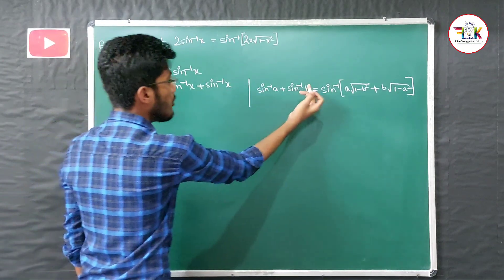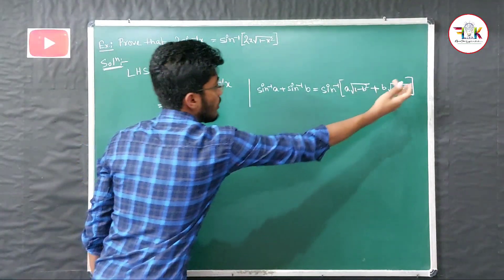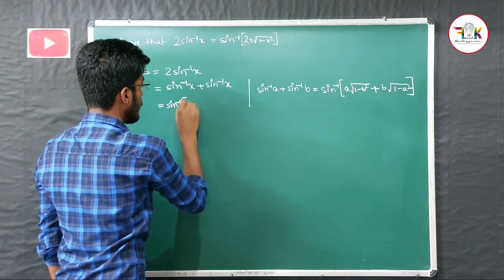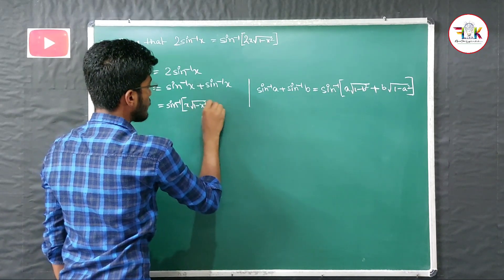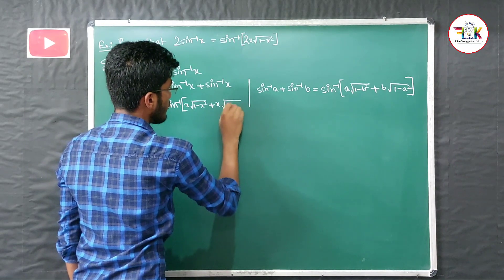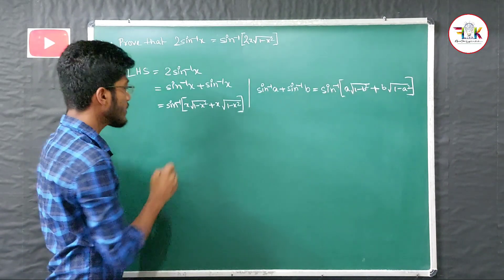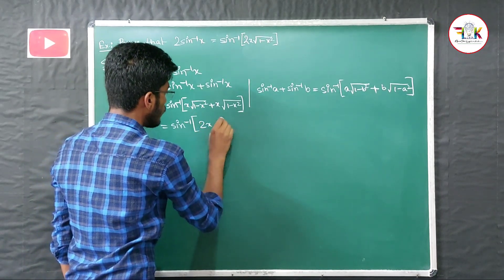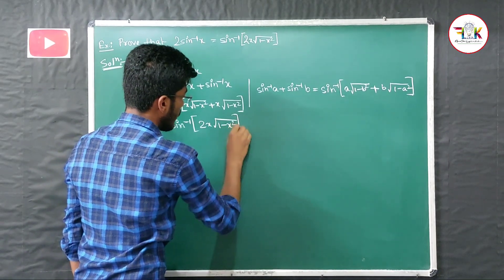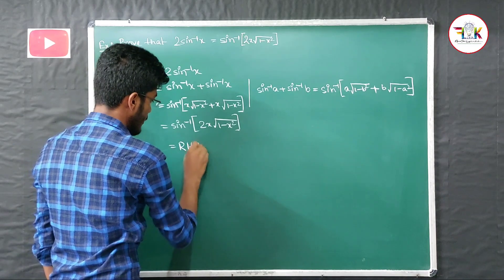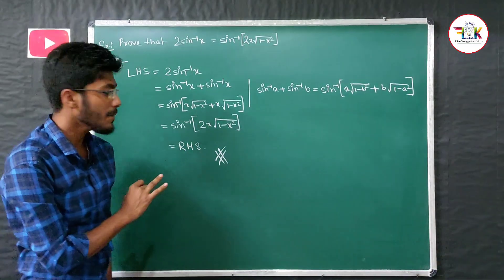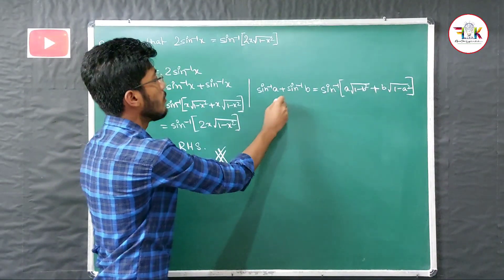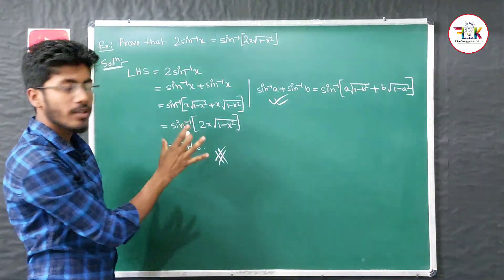Here both a and b are equal to x. So we get sin⁻¹(x·√(1-x²) + x·√(1-x²)), which simplifies to sin⁻¹(2x·√(1-x²)). That proves the first question. Now let's move to the second question.